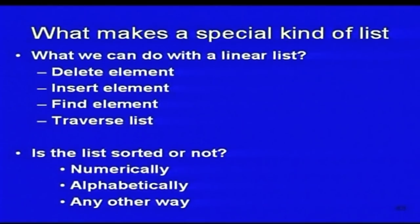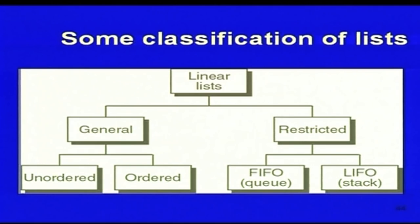What can we do with a linear list? We can delete an element, insert an element, find an element, traverse a list, and sort numerically or alphabetically. When you look at lists and specifically linear lists, you can think of two types: general lists and restricted lists. General lists can be unordered or ordered. Restricted lists can be FIFO — that is the queue — or LIFO, which is the stack.